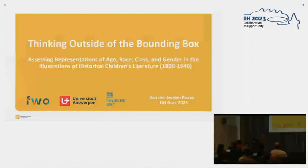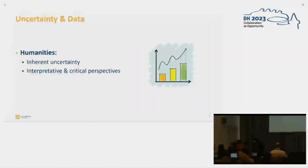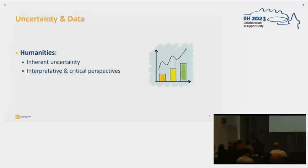Why did I do so? Because I think it is paramount that we pay more attention to the decision-making processes that go along with research projects, especially in the digital humanities. In the humanities, we're always working with inherent uncertainty and we're looking for interpretive and critical perspectives rather than stone-cold facts or objective truths.